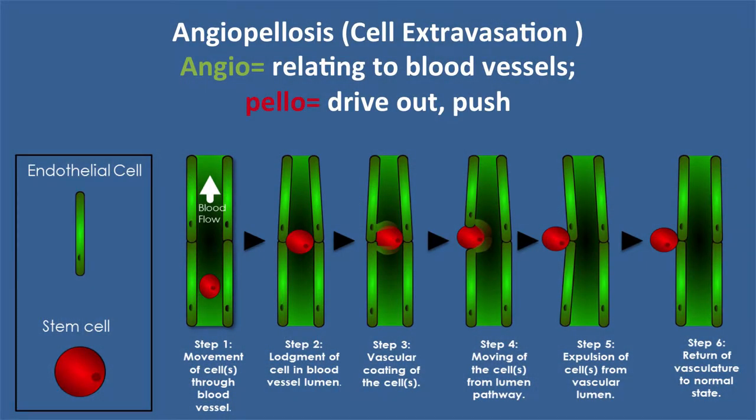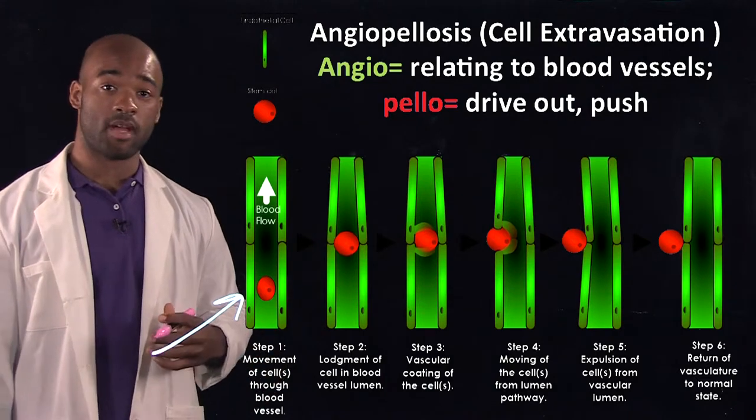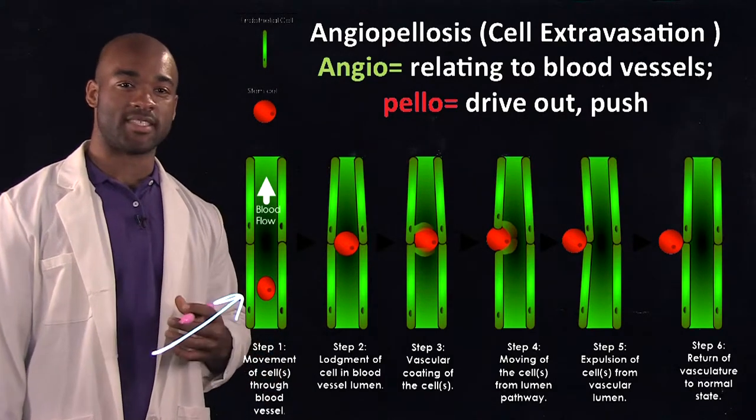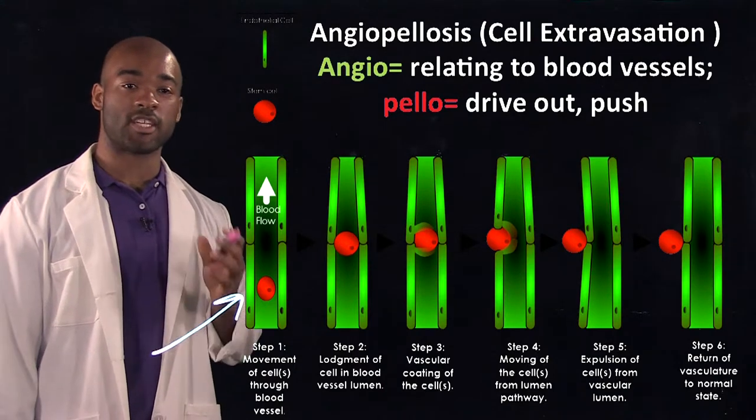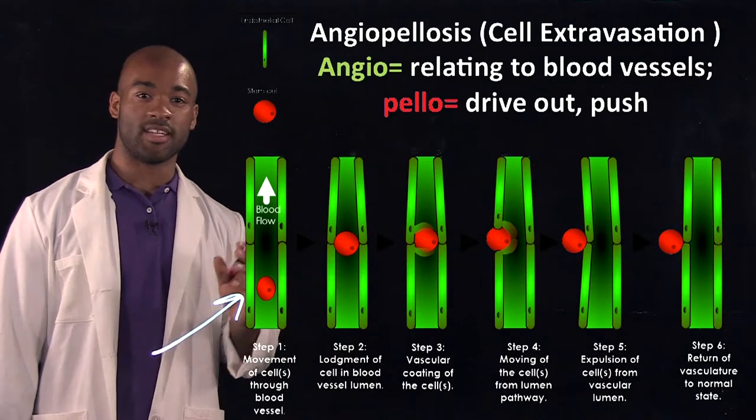We have observed that stem cells undergo a multi-step process to extravasate when directly injected into the bloodstream. First, the stem cell will travel through the bloodstream where it then becomes enlarged or attaches into the blood vessel wall. Once attached, the blood vessel wall will then extrude protrusions around the cell and then remove it from the lumen into the surrounding tissue.